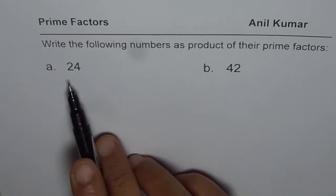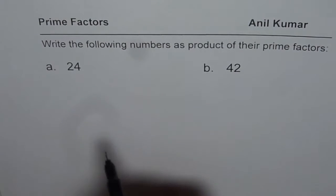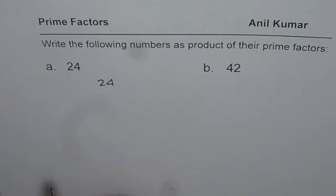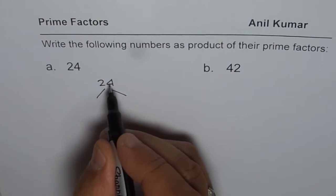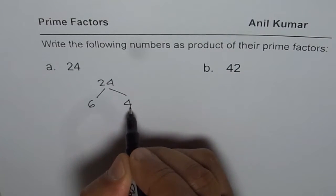We are given two different numbers, 24 and 42. Let me begin with 24. So write down 24, and then what are the factors of 24? You could say 24 is 6 times 4. So we could write 6 times 4 is 24.